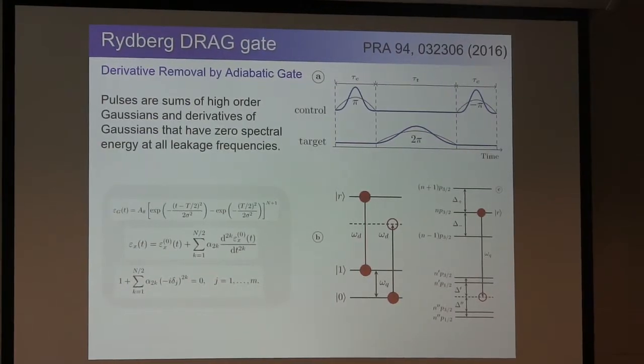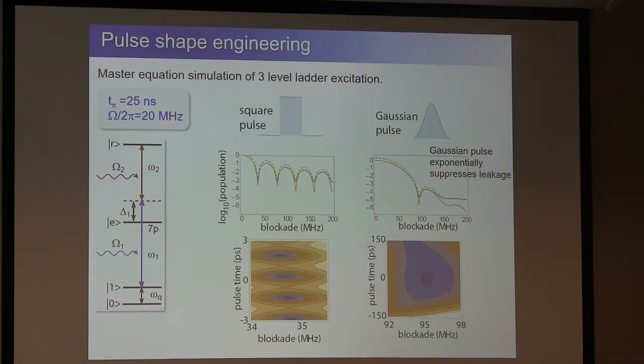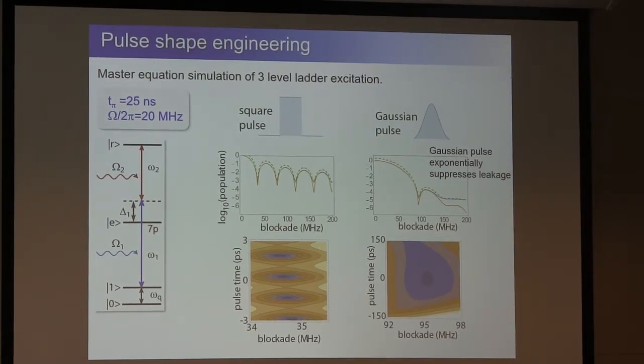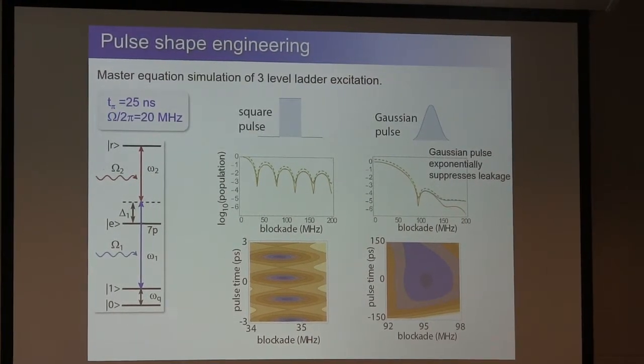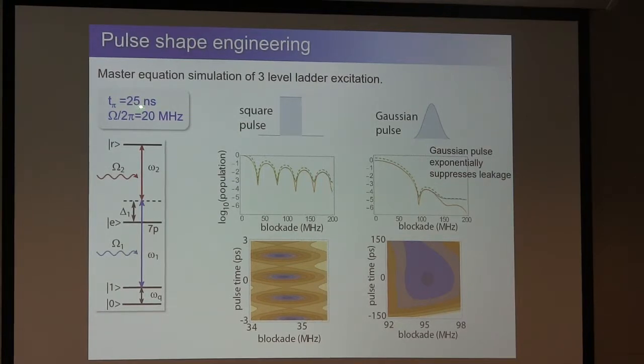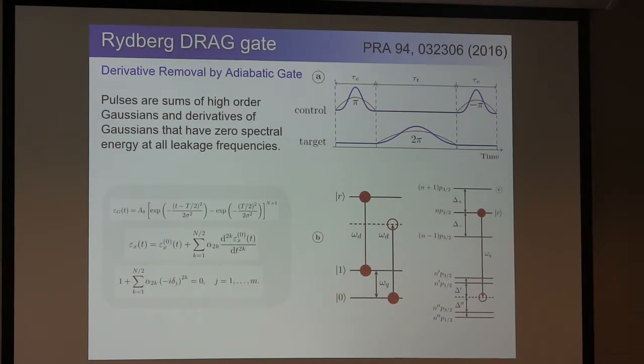So can we use that in a gate sequence? And that sort of led to this work with Frank Wilhelm's group on the Rydberg DRAG gates. So then we looked at this DRAG gate. Lousy acronym, but it stands for derivative removal by adiabatic gate. And Frank Wilhelm's group and other people developed these in the context of superconducting qubits, which in a sense presents some of the same challenges as the Rydberg experiments. Because in the superconducting qubits, you have this weak anharmonicity, and you need to excite the qubit level without putting populations at these higher excited levels. We have the same problem, because there's these multiple Rydberg states.